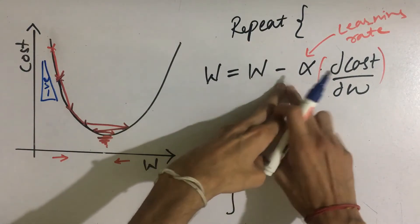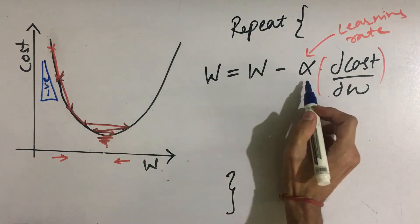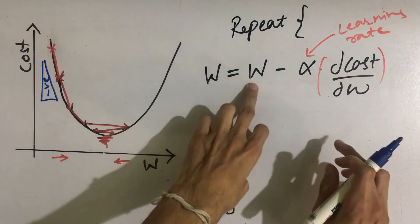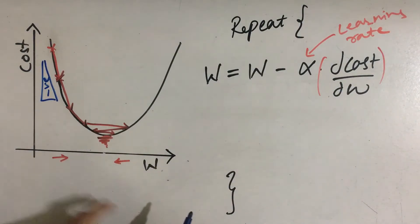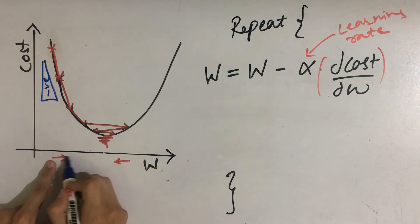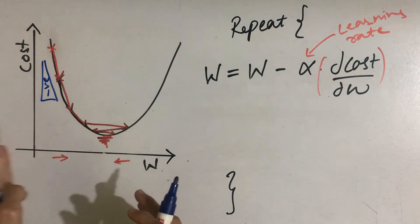So we will increase w by a small quantity. As alpha here is very small, so we will update w by a small quantity. So w will increase by a small amount and thus it will go towards the minima.